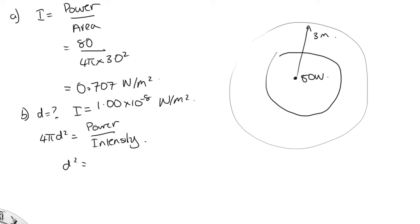So d squared is equal to power, which is 80, over 1.00 times 10 to the minus 8 times 1 over 4 pi. So d squared is equal to 636,619,772.